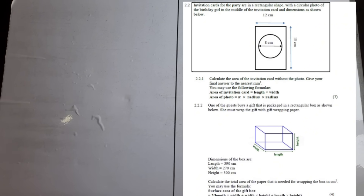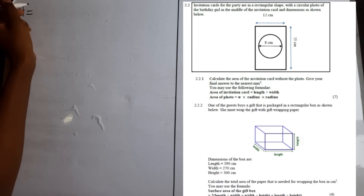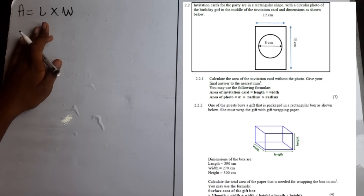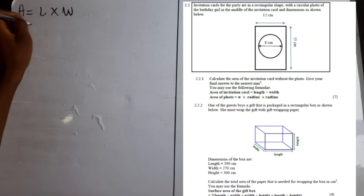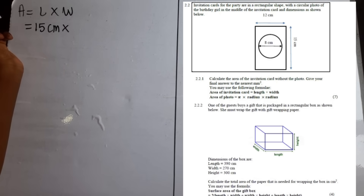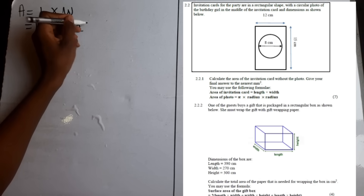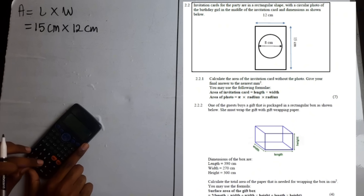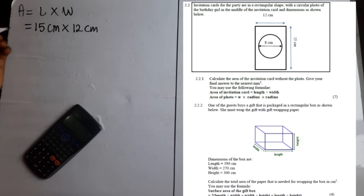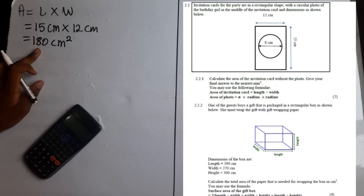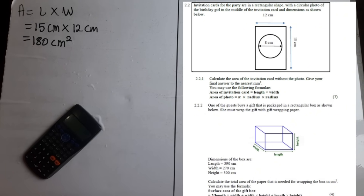We are going to start with the invitation card. The formula says area equals length multiplied by width. All we need to do is substitute and get the answer. The length of the invitation card is 15 centimeters and we multiply it by the width which is 12 centimeters. So 15 cm × 12 cm gives us 180 centimeters squared — that is the area of the invitation card.